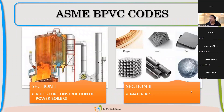What are the different ASME codes which we are following for different applications? Section 1 was the first code which was created, and that was for power boilers.